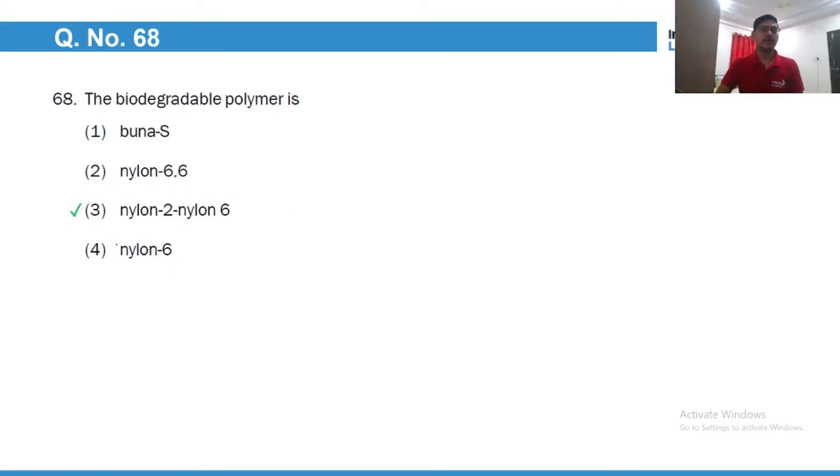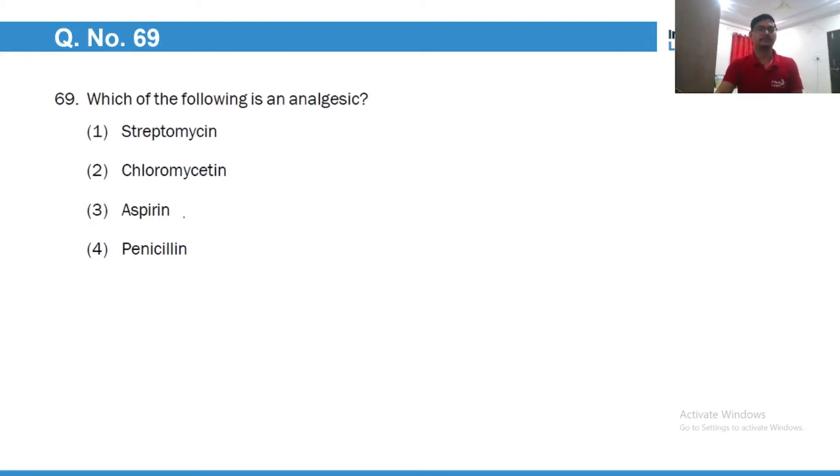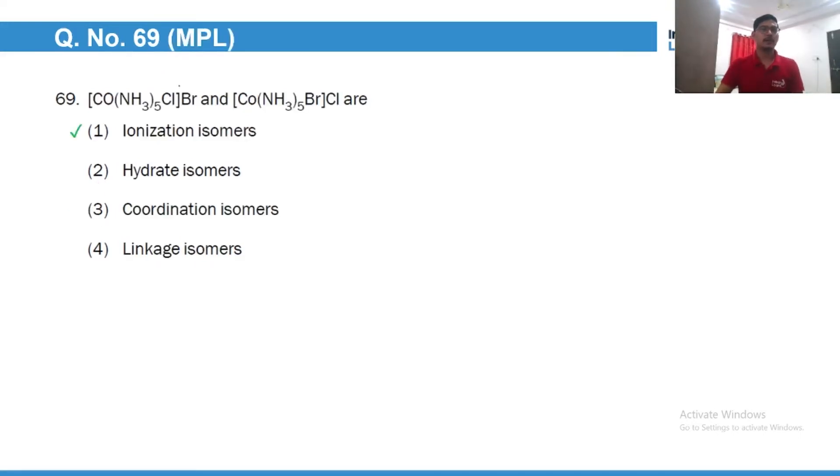Biodegradable polymer is of course nylon 2-nylon 6, which is the monomers of which are glycine and amino capric acid. Aspirin is an analgesic, it's acetyl salicylic acid. Of course Cl and Br exchanging the position, so they are ionization isomers. One ionizes to give bromide and other ionizes to give chloride.